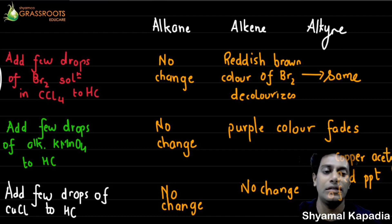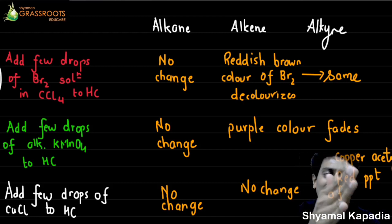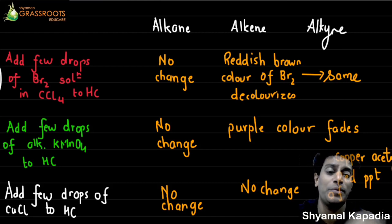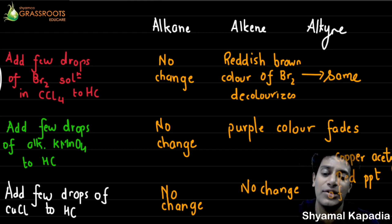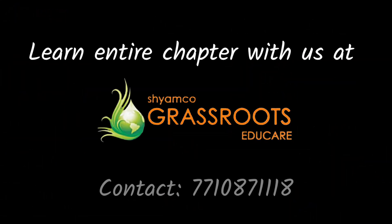So if you want to distinguish between alkane and alkene or alkyne, you can use the first two solutions — the ones written in red and green. But if you want to distinguish between alkene and alkyne specifically, you compulsorily have to use the last solution — ammoniacal cuprous chloride — to identify which one is the alkyne.